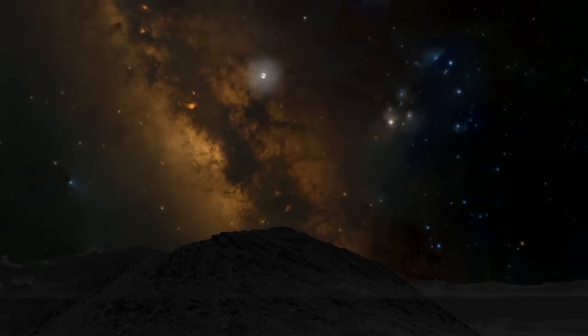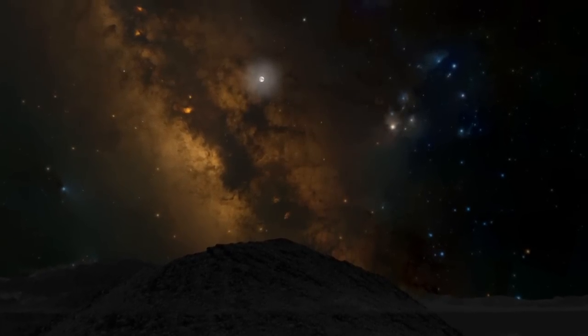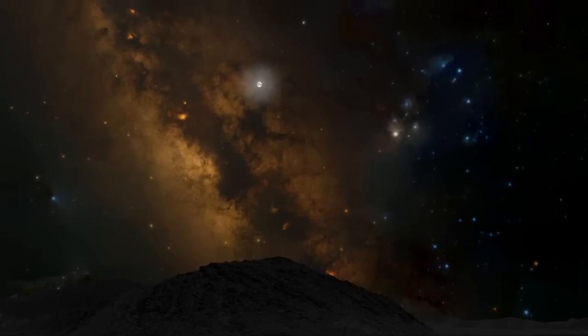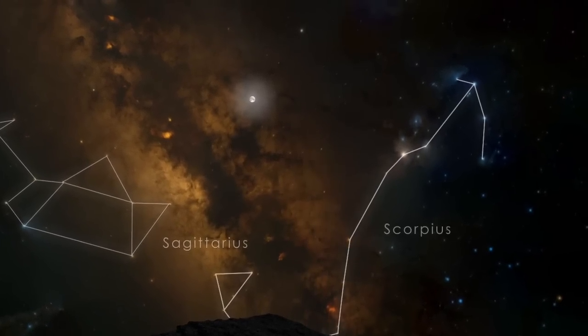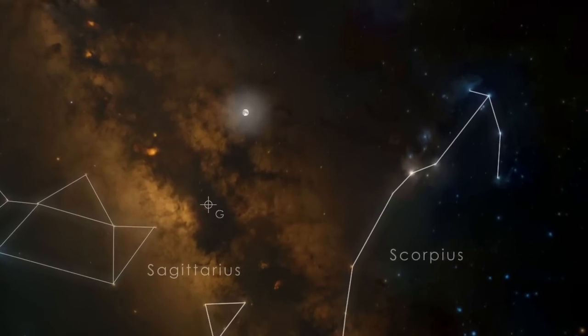The Milky Way is a diffuse glow that marks the central plane of our home galaxy. It's brightest whenever the constellations Sagittarius and Scorpius are in view. Between them, we're looking toward the very center of the Milky Way.